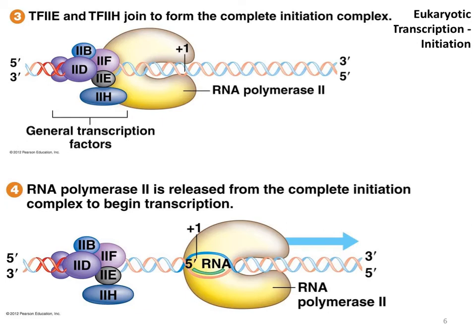RNA polymerase II will then begin transcription — initiation is now done. RNA polymerase will continue and transcribe the length of the gene, moving along the DNA in the 3' to 5' orientation, producing new RNA in the 5' to 3' orientation by adding new nucleotides to the 3' end of the growing RNA strand. It is catalyzing the formation of phosphodiester linkages, all as discussed in previous lectures.